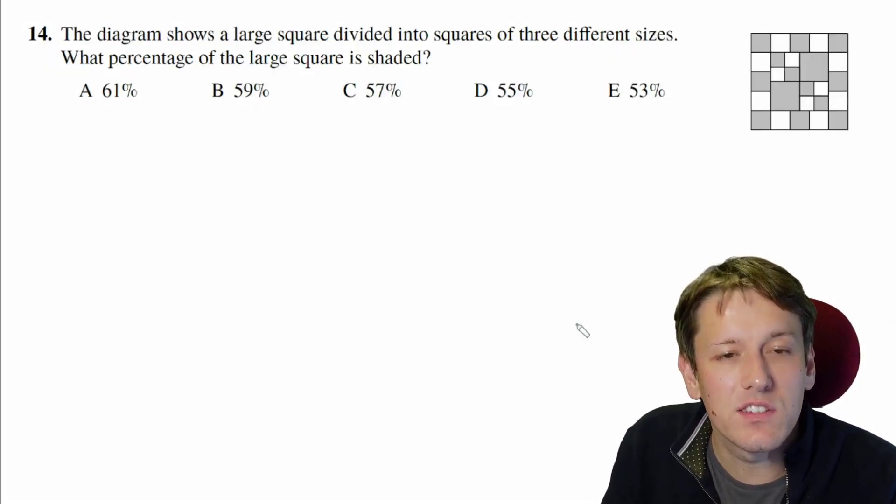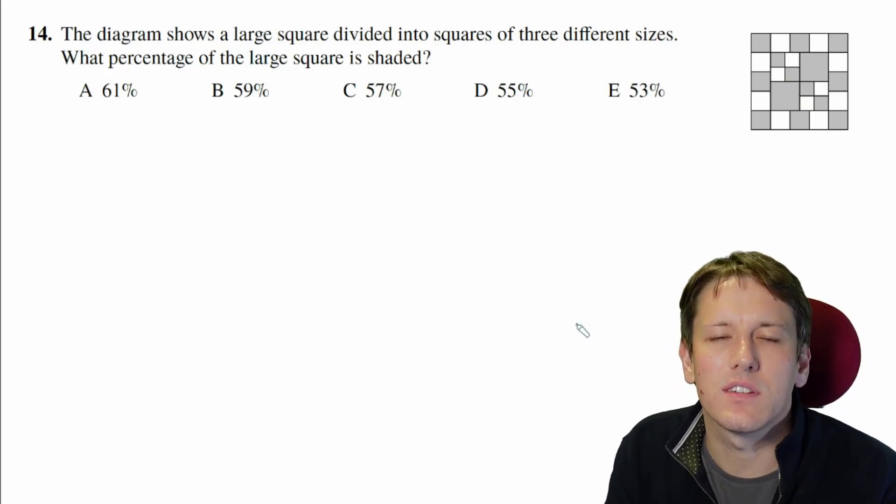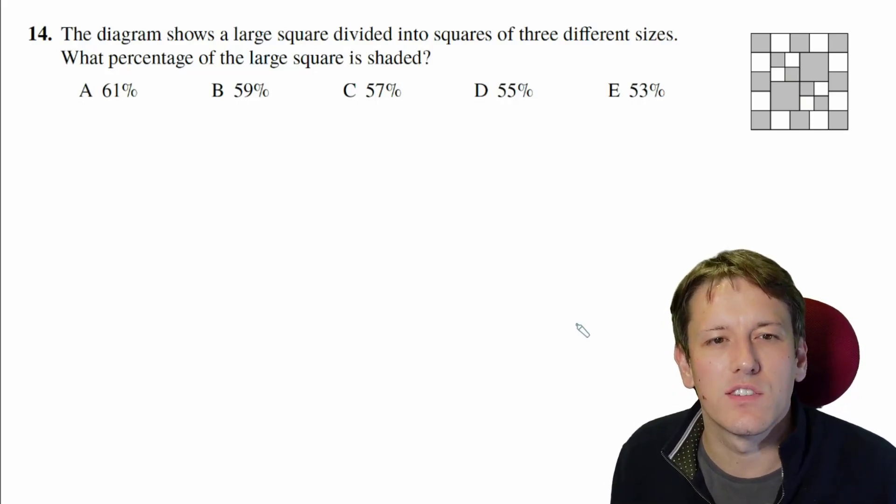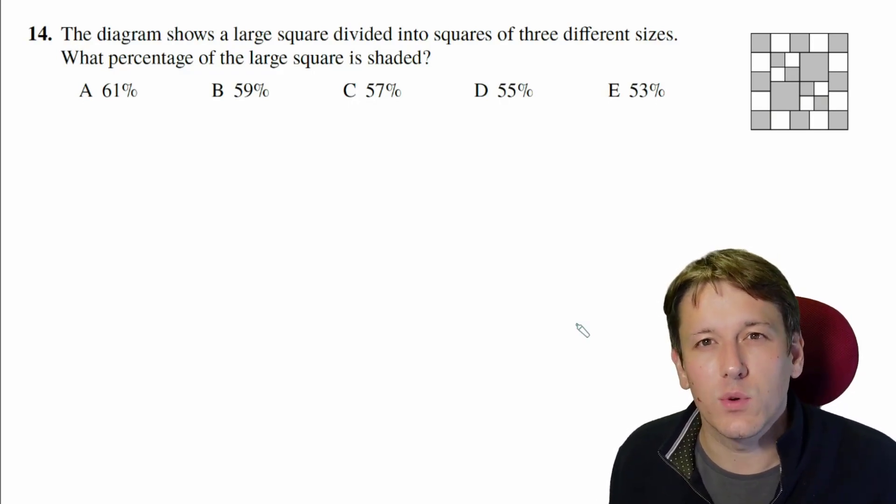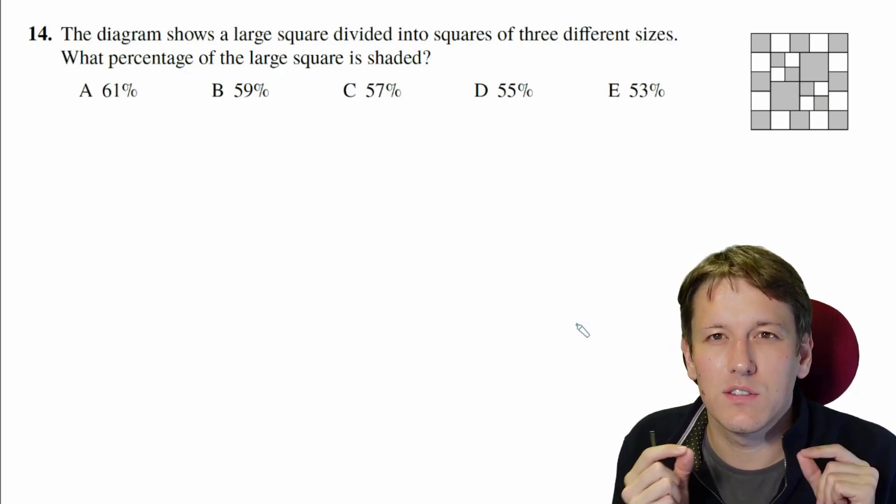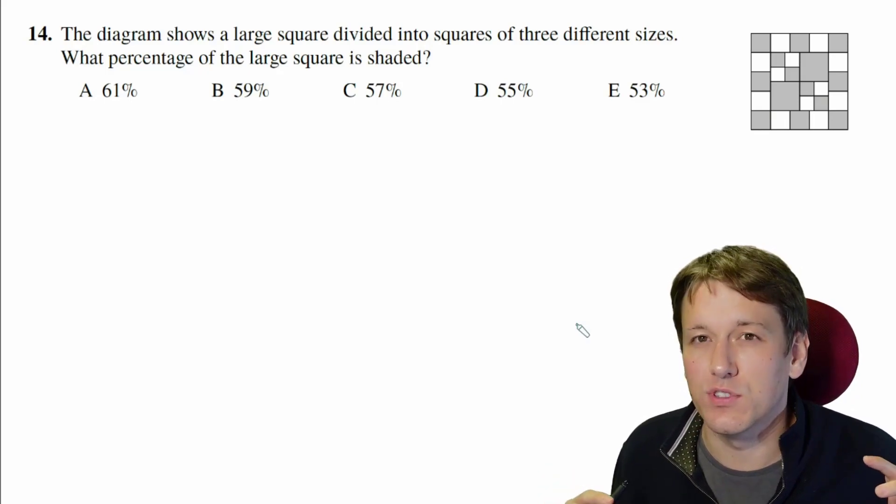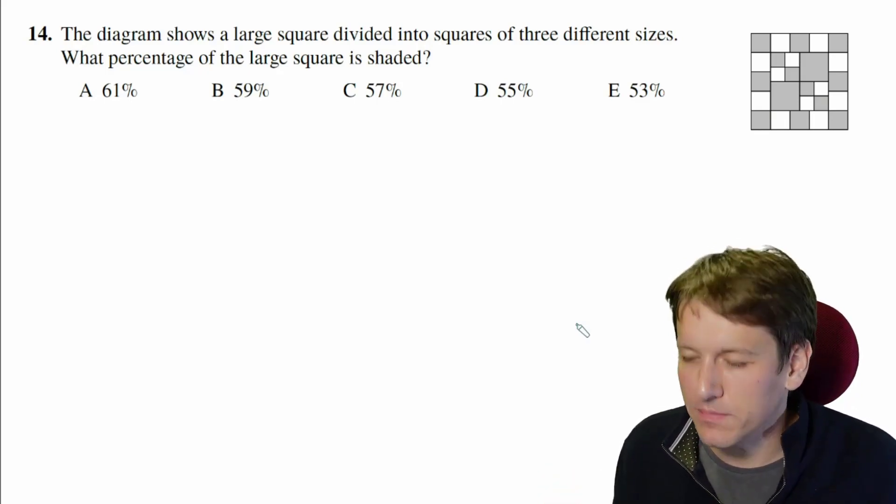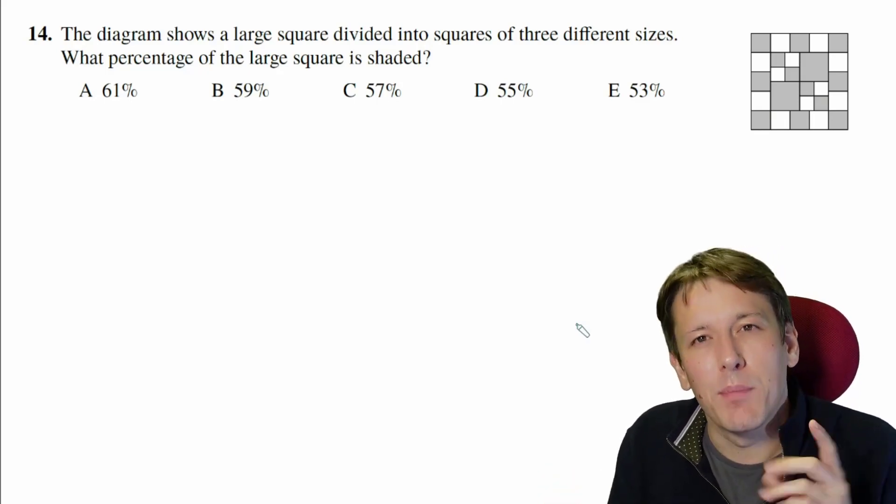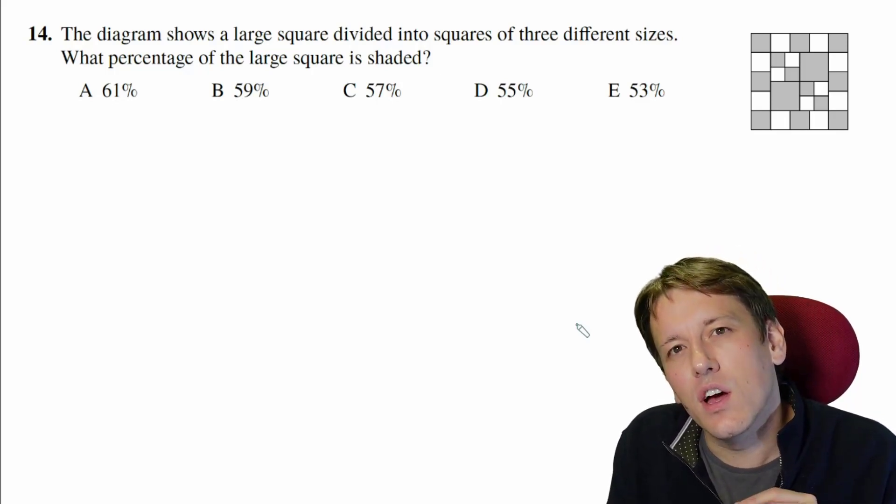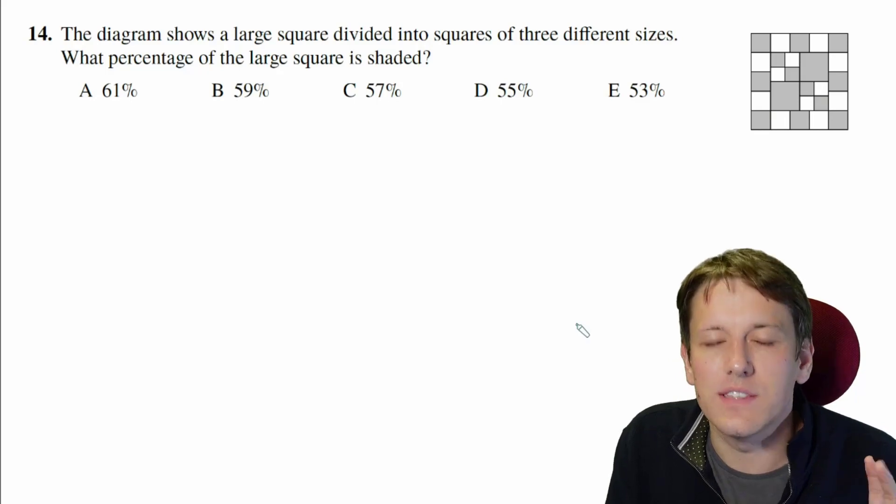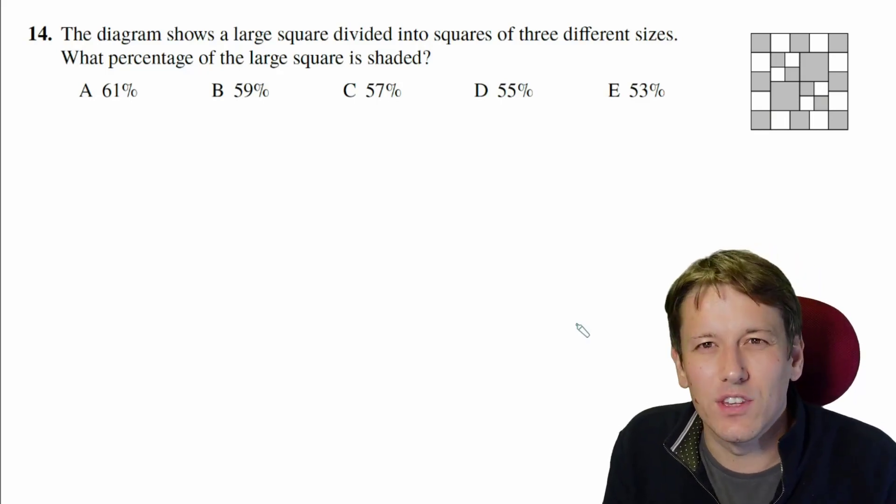The diagram shows a large square divided into squares of three different sizes, and we want to know what percentage of the large square is shaded. This is quite a tricky example of a question like this, because often in these questions, we can just find a smallest square, divide everything into those small squares, and then just count them up. That is possible here, but you have to go to really, really small squares to do that, and so fine if you've managed to do that, but probably that's not the way I'd go with this one.